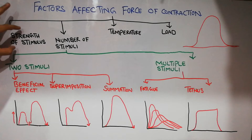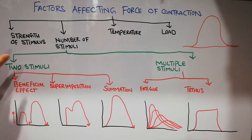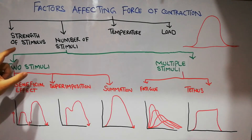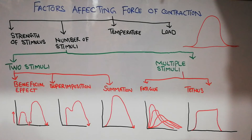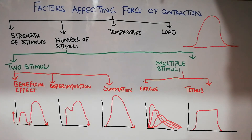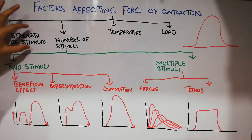We have already discussed the effect of strength of stimulus on the force of contraction. The stimulus could be sub-minimal, which will not excite the muscle; minimal, which just excites the muscle; sub-maximal, which is more than minimal; maximum; and supra-maximal, above which the force of contraction cannot be increased. That was discussed previously in the topic of excitation.